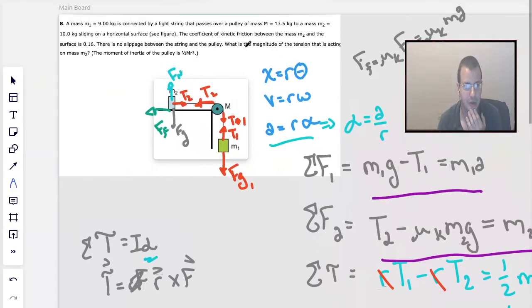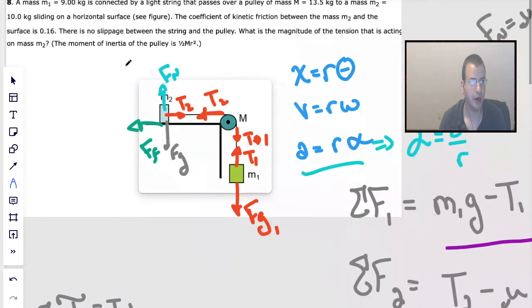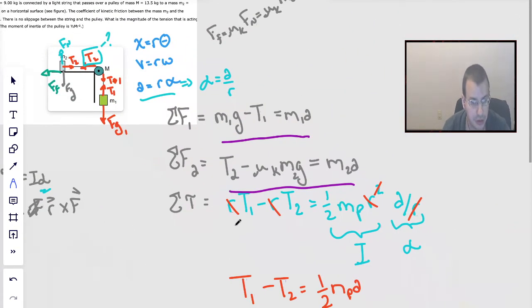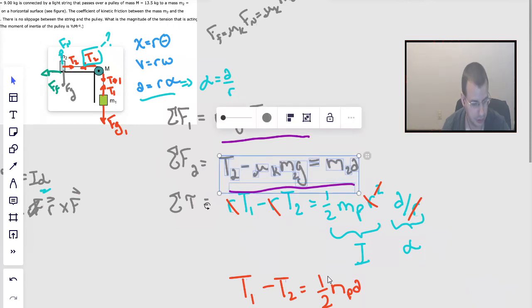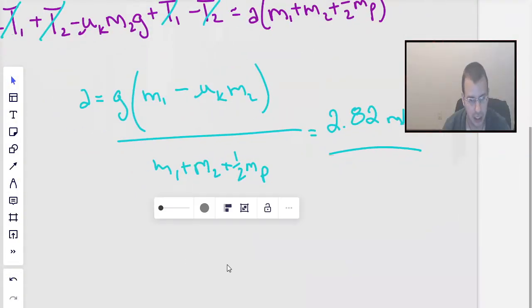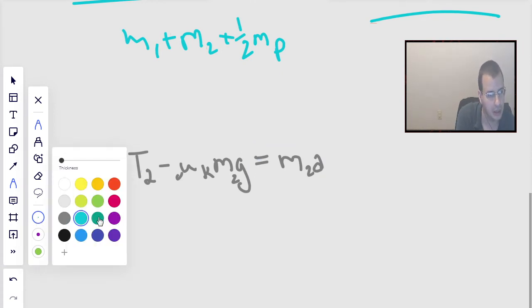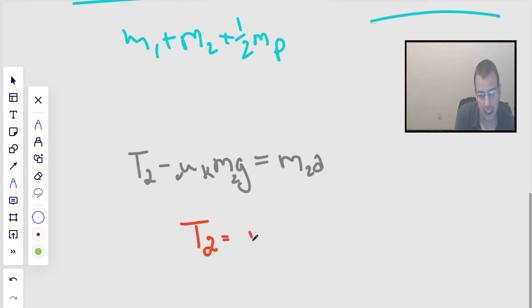Now they don't care about the acceleration, they want tension 2. So we're going to go back to our equations, find the one that has tension 2 in it. This equation right here. We're going to take it down over here. Now this equation only has one unknown in it. I'm going to rewrite it. Tension 2 is mass 2 times acceleration plus coefficient of kinetic friction times gravity.